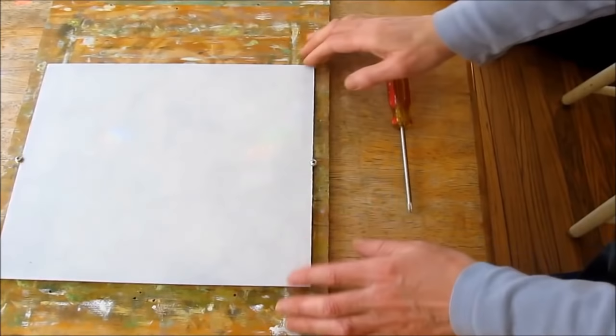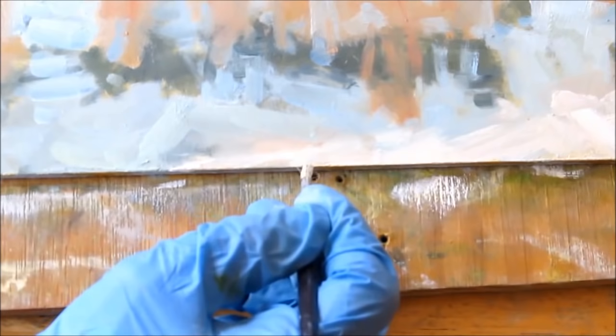When you're done with the painting and you remove the screws, you can cover the small half moons of exposed board with matching paint. Now you're ready to try out your new easel adapter.